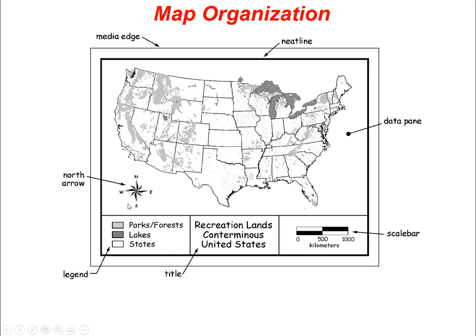Next is a north arrow. Sometimes the north arrow is not important — it depends on the map projection. If you're using UTM, north is always straight up on the page, so a north arrow makes sense. But if you're using a conformal conic, north is different everywhere you look, so a north arrow is not necessarily that important. Then there is the neat line that goes around the map, which clearly identifies where the map is. The area with the data is called the data pane.